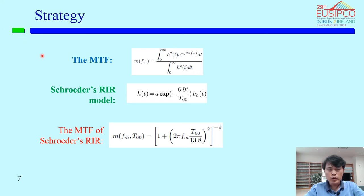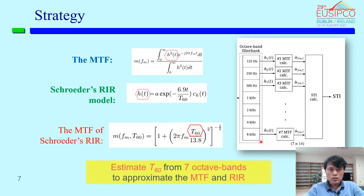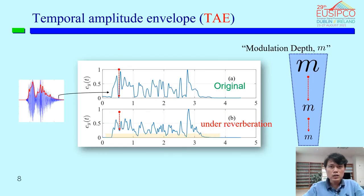The strategy of this study utilizes the relationship between the definition of the modulation transfer function (MTF) and the Schroeder IR model. The MTF of the Schroeder model is shown in this equation, along with the mechanism of the STI algorithm that calculates the MTF for seven octave bands. From this relation between MTF and RIR, and the mechanism of STI, we estimate the T60 reverberation time for seven octave bands, then use this equation to approximate the MTF.